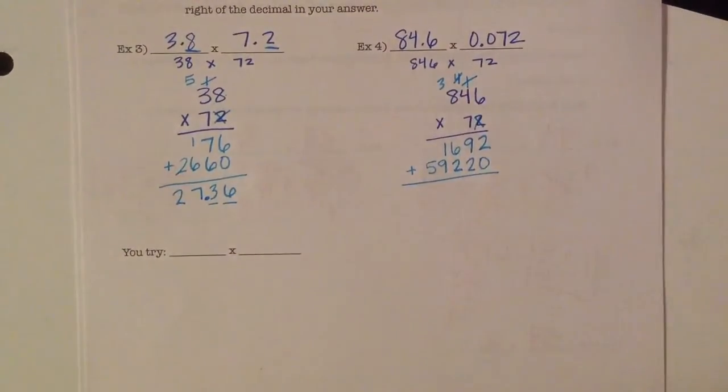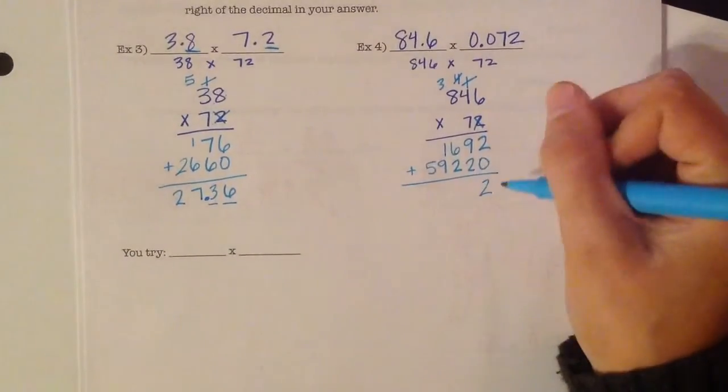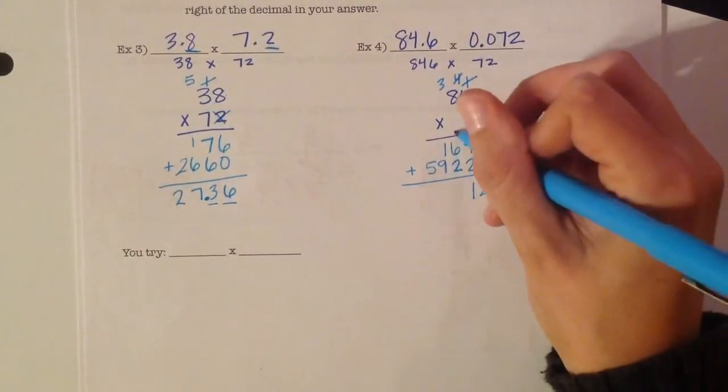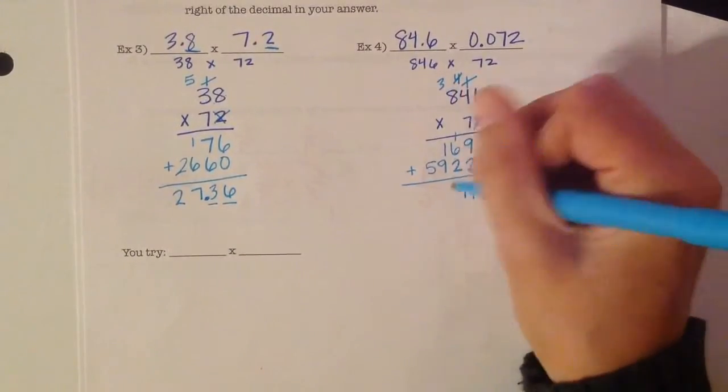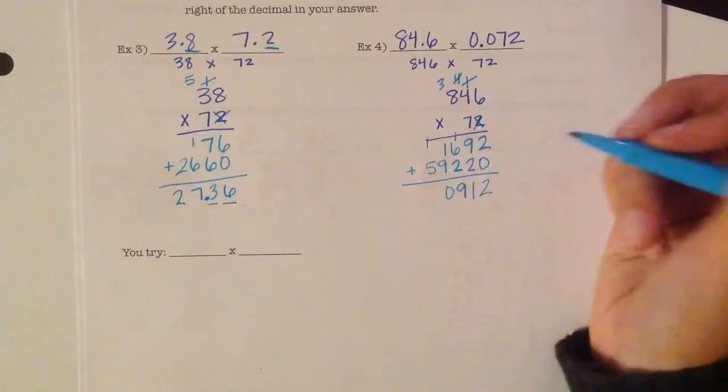And then we can go ahead and add. 2 plus 0 is 2. 9 plus 2 is 11. 6 plus 1 plus 2 is 9. 1 plus 9 is 10. Carry the 1.